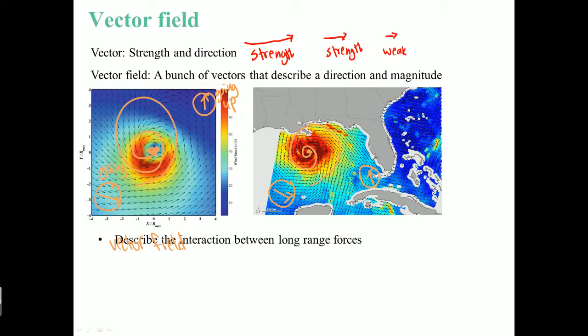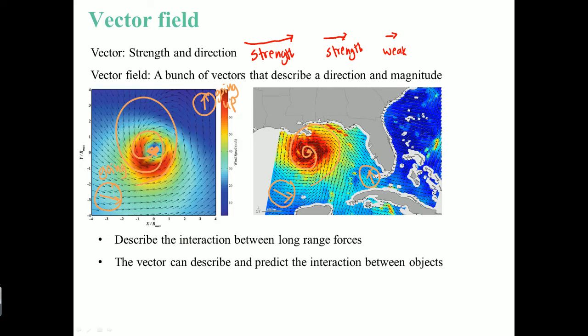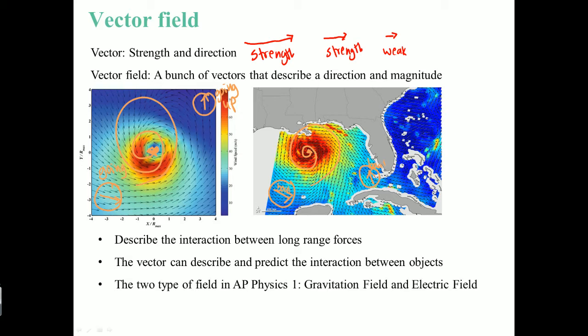Vector fields are most useful to describe interactions between long-range forces. They can also describe and predict the interaction between objects. For example, if you put a boat here, you could say it will go this way. If you put a boat right here, it would go upwards — based on the arrow, it's going to tell you where the object would move. The two different types of fields we're going to work with, which are long-range forces, are your gravitational field and your electric field.